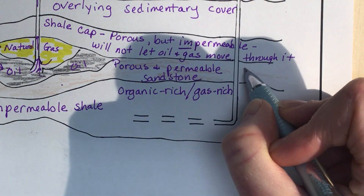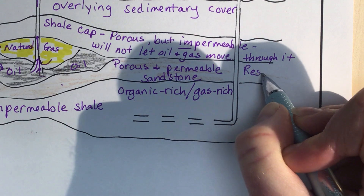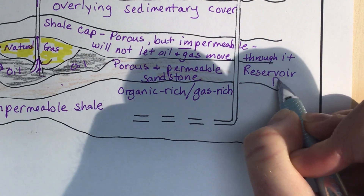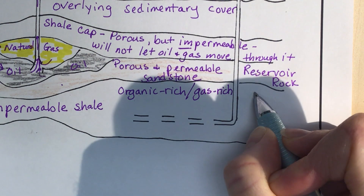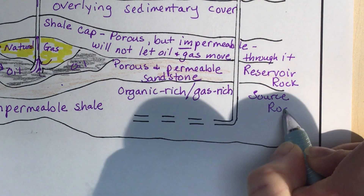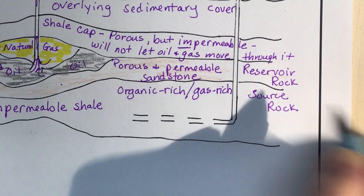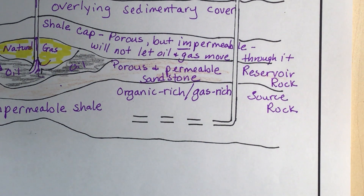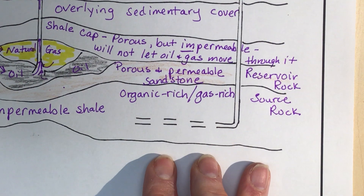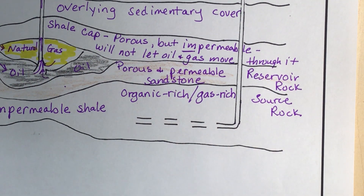This sandstone layer is called a reservoir rock, and the lower shale layer is called a source rock. Originally when fossil fuels were made, the organic sources were in this lower layer, and as things shift through plate tectonics and earthquakes the layers can get moved around.